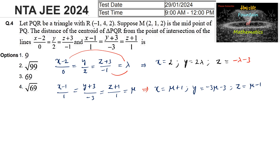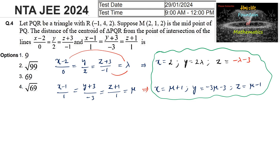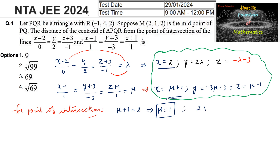For the point of intersection, the x, y, and z coordinates of both lines must be the same. Equating x coordinates: μ + 1 = 2, which gives μ = 1. Equating y coordinates: 2λ = −3μ − 3. Substituting μ = 1: 2λ = −3(1) − 3 = −6, so λ = −3.